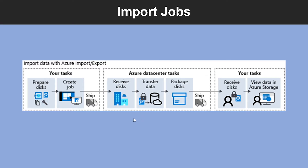Next, use the Azure portal to create the import job and ship the disk to the destination specified when creating the import job, then update the job by providing the shipment tracking number. Once the disk arrives at the destination, the Azure Data Center staff will carry out the data copy to the target Azure Storage and ship the disk back to you.